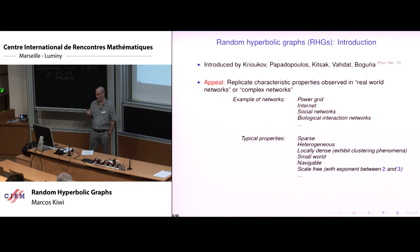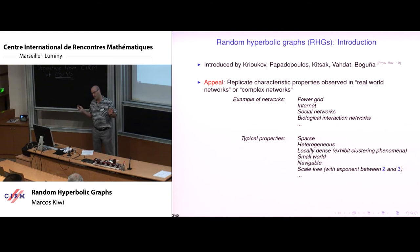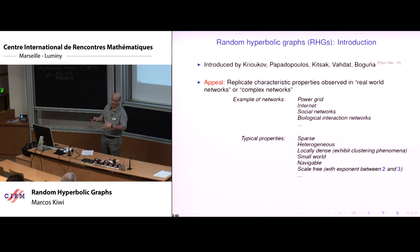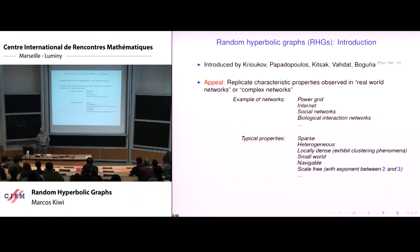The nodes' degrees follow a power law distribution with an exponent that empirically is always between two and three. The nice thing about random hyperbolic graphs is that the definition is very formally elegant and it exhibits all of these properties. More importantly for us, they are susceptible to mathematical analysis, and it's an interesting and fun analysis to do.